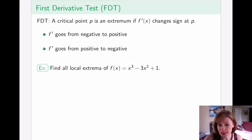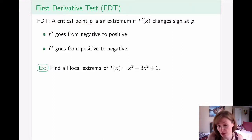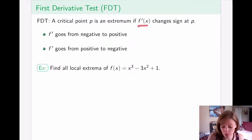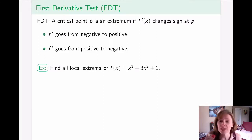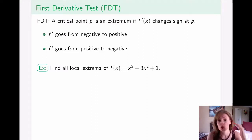The first derivative test tells us how to classify a critical point as a local maximum or local minimum. A critical point — where the derivative is either zero or does not exist — is an extremum if the derivative actually changes sign at that point. Notice that it's not just that the point is critical; it's the fact that the derivative goes from positive to negative, or the other way around, that determines whether it's a maximum or minimum.